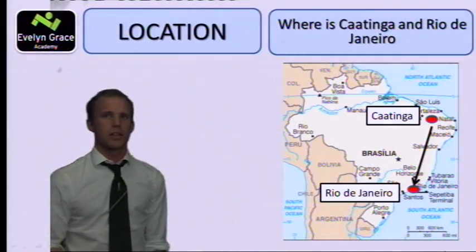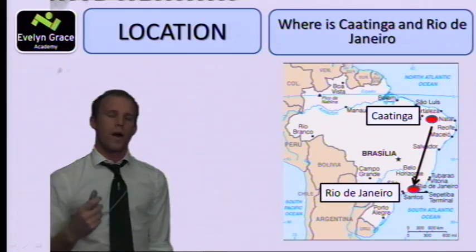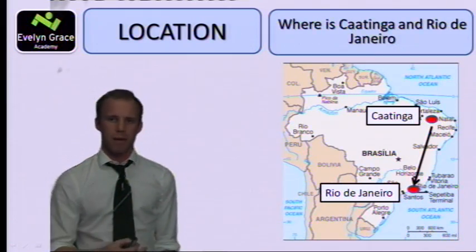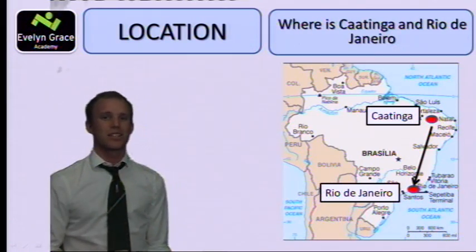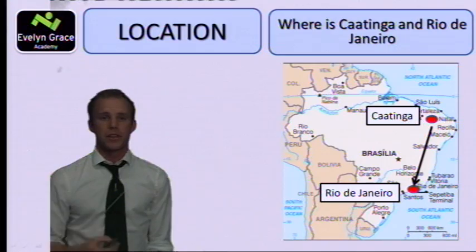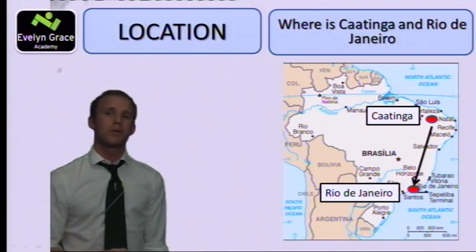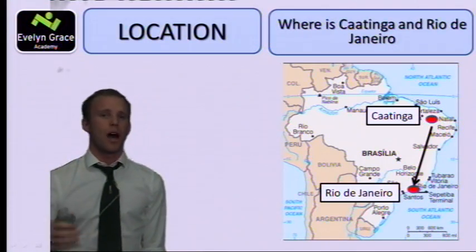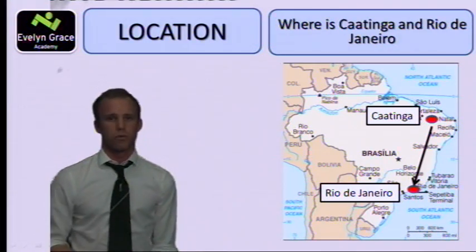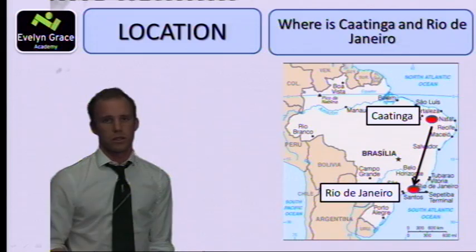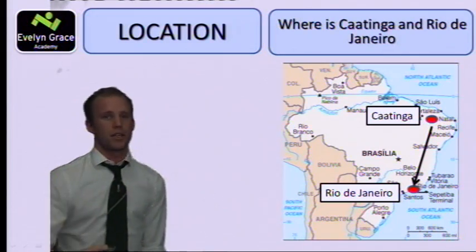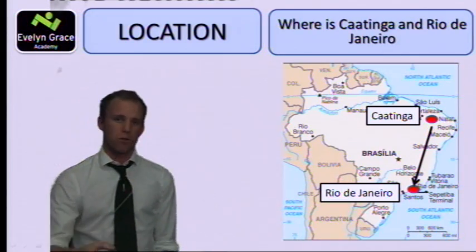First things first — where is Caatinga and where is Rio? From this map you can see that Caatinga is in the north of Brazil, and the general movement of people is from this region in the north southwards to Rio on the coast — so the general movement is southerly, almost south-west.